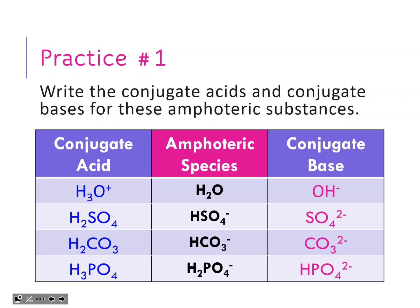Before we proceed talking about the conjugate acid-base pairs and the reactions, let's make sure we have this down. When we are talking about conjugate acids and bases, we're looking at the amphoteric species in the middle. To get to the conjugate acid, you need to add in the H plus. So that means you add on the H, but you also go up one in the charge.